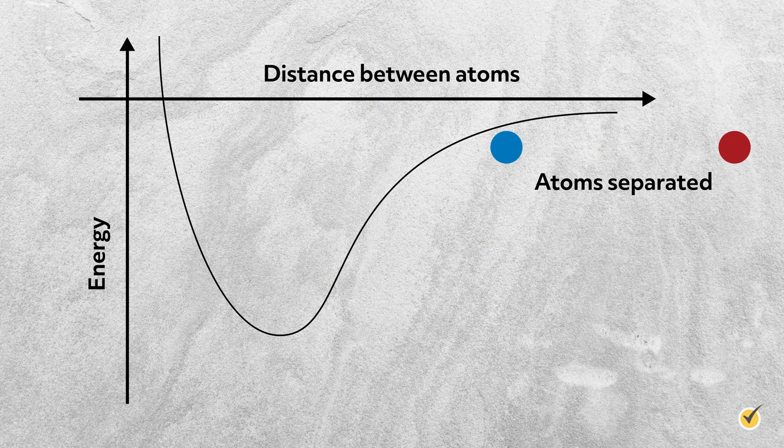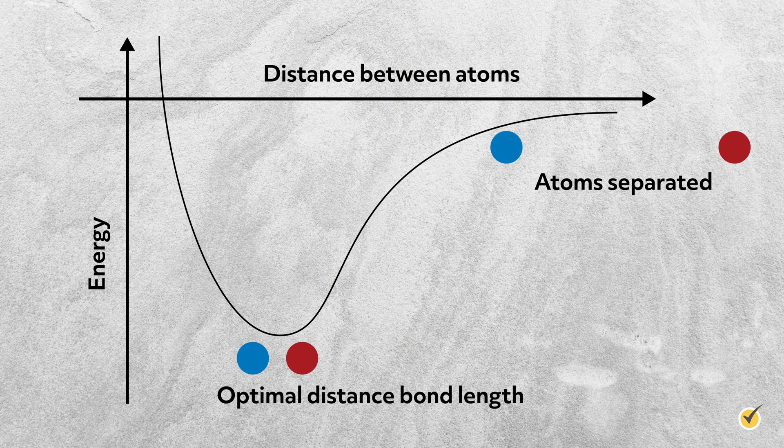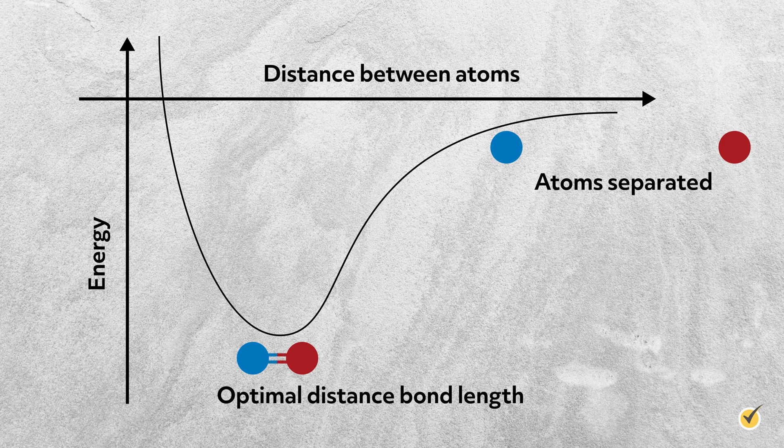Let's start by considering why two atoms bond in the first place. Alone, their aggregate energy is here, but when they get close together, their combined energy drops. This happens because the two atoms form a bond by sharing their valence electrons with each other. How and the extent to which they share those electrons determines the type of bond.